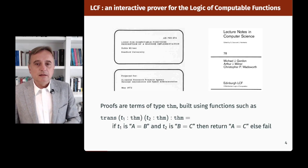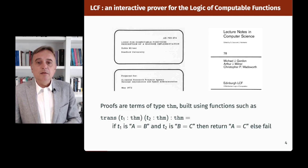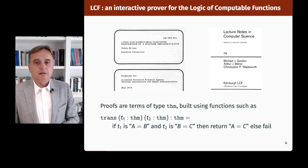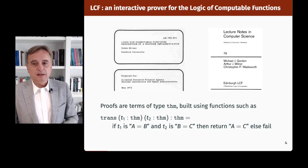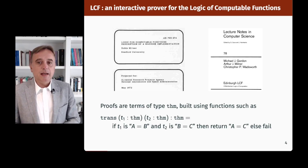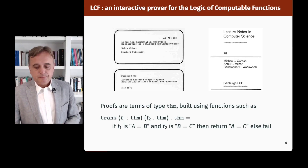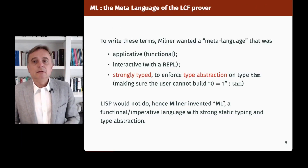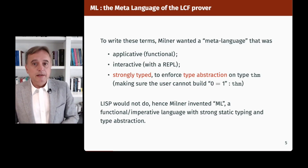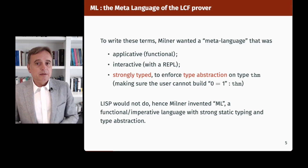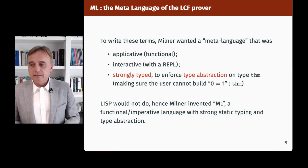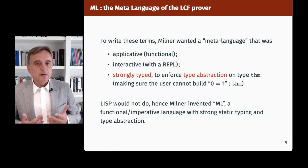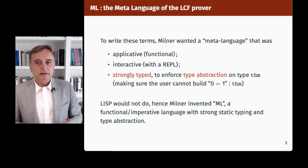For instance, here is the inference rule for transitivity of equality. Trans(T1, T2) checks that T1 proves A equals B, and T2 proves B equals C, and then returns a theorem saying A equals C has been proved; otherwise it would fail. To write these terms, Milner wanted a meta-language that was applicative, functional, interactive with a read-eval-print loop, and strongly typed to enforce type abstraction on type THM. It is crucial that the only THMs that can be manipulated are those built from the axioms and the inference rules of the logic.